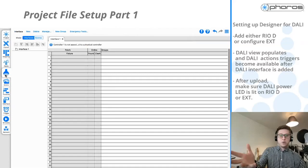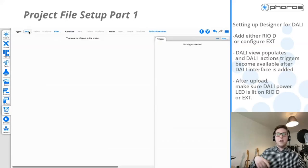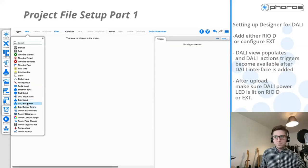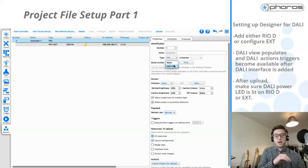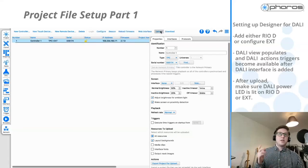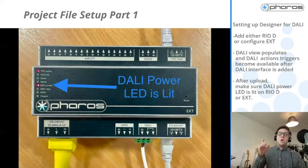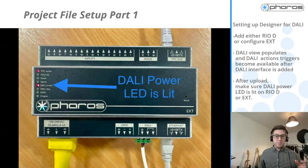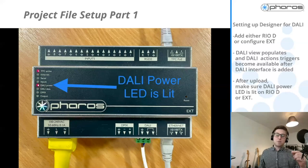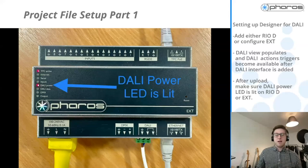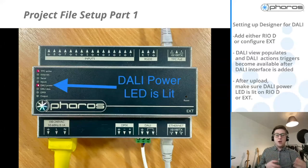A new interface will now populate and you'll get the DALI tab. In the triggers view, you'll notice a set of triggers and actions specifically for the DALI protocol. Once that configuration is set up in your network view, do a quick upload to the controller so it knows it needs to integrate with a DALI system. You'll know the power is correct because the DALI LED will be lit on the Rio D or EXT. If it's blinking, the power is incorrect; if it's not lit, there's no power. The DALI data light should also flash whenever you send a command to your DALI ballasts.